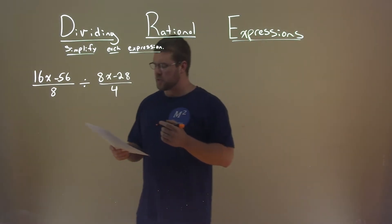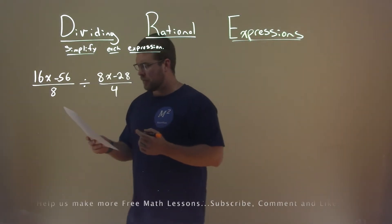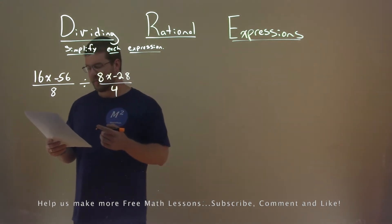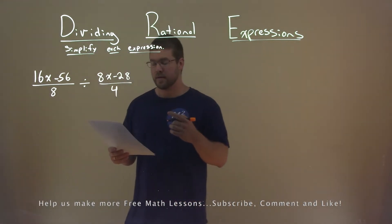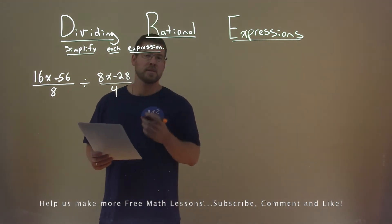We're given this expression right here: 16x minus 56 divided by 8, divided by 8x minus 28 divided by 4. We need to simplify this expression.